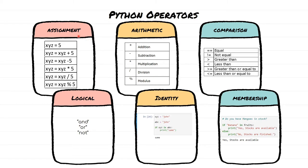The assignment operator is used whenever we are assigning any value to a variable. In many of our previous sessions we have created variables and assigned some value — at that time we were using the assignment operator. This equal-to sign is the assignment operator. Here we are assigning the value 5 to variable XYZ, and in the next case we are adding 5 to XYZ and assigning it back to XYZ.